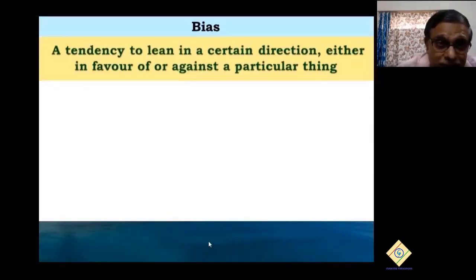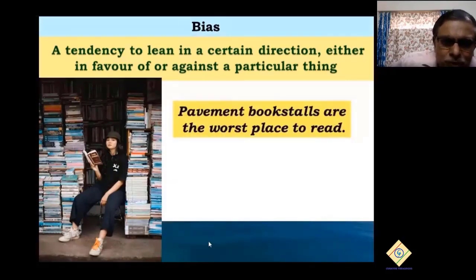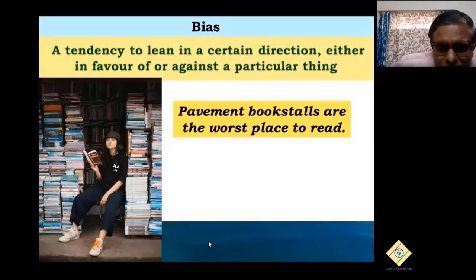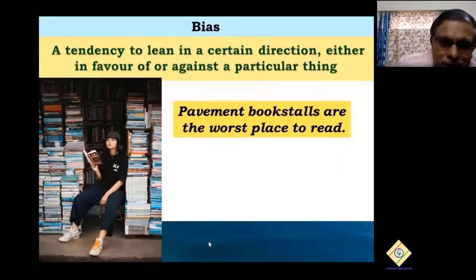Equally important is bias — you tend to favor something, there's some kind of a slant, and you think that is right. Now, look at this person reading at a pavement book stall. If somebody says 'pavement book stalls are the worst place to read,' that is only an opinion. Sometimes in the evening if you take a walk, you'll see several pavement book stalls and you may come across treasures there — books you've been hunting for. So simply making such a statement is a bias.